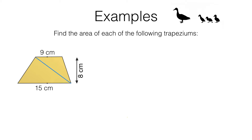Now the area of the trapezium will be the area of this triangle here plus the area of this triangle up here. We know our formula for area of a triangle — it's going to be a half base times height. So this first triangle has an area of a half of 15 times eight, and we need to add on the area of the second triangle.